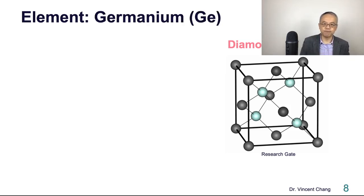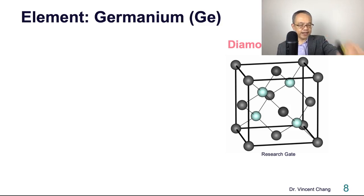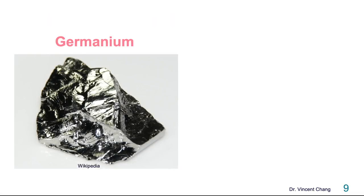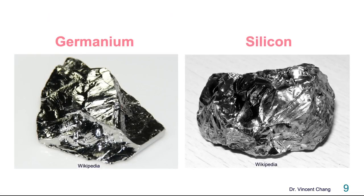The same crystal structure applies to germanium — germanium also has the diamond structure. On the left-hand side is native germanium material, but it's quite expensive. On the right-hand side is silicon. So why silicon? Why not Germanium Valley? Why is it called Silicon Valley?